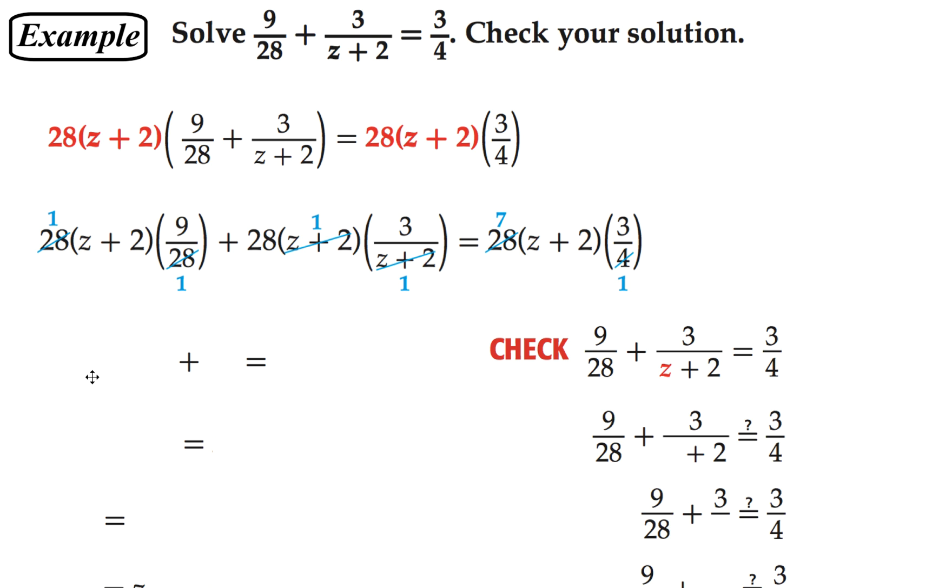My second term, the z plus 2s cancel, and I have 28 times 3, which is 84. And on the right-hand side, the 4 goes into 28 seven times, and I have 7 times 3. 7 times 3 is 21, and 21 times z plus 2 is 21z plus 42.